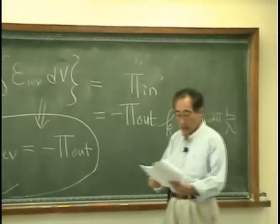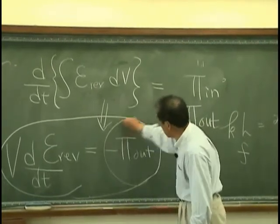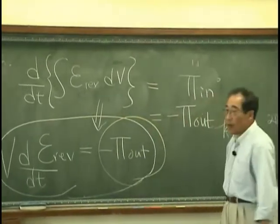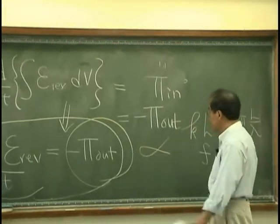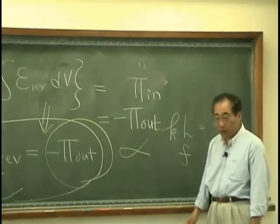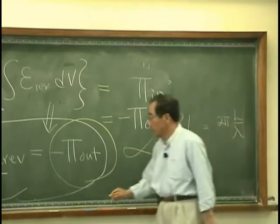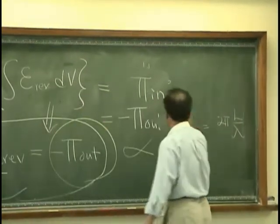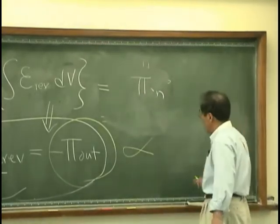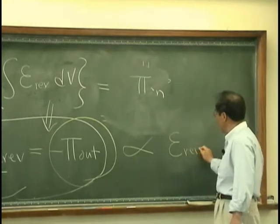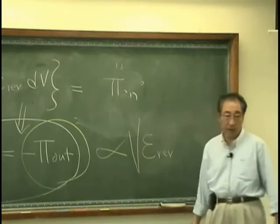Now then I can argue that this pi out is proportional to energy density of revolver and fuel and volume.